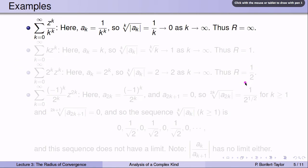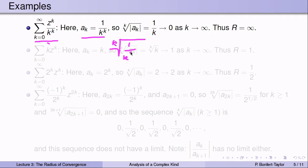Let's look at some examples. For the series sum of z^k / k^k, where a_k = 1/k^k, the k-th root of |a_k| is the k-th root of 1/k^k, which is just 1/k. As k goes to infinity, 1/k goes to 0. Since the limit is 0, we take 1 over the limit, which is infinity. So the radius of convergence is infinity — confirming what we found via the ratio test.